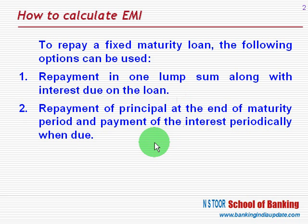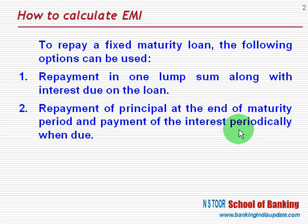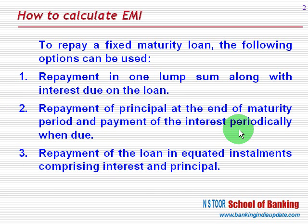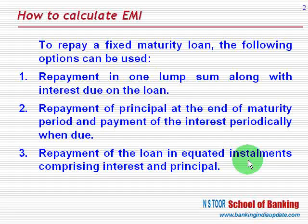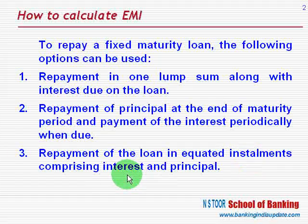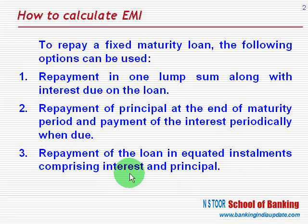Second option: he can repay the principal at the end of the maturity period and in the meanwhile he continues to pay interest periodically when due. Third option: he can repay the loan in equated installments, and that installment includes interest due till that time plus a part of the principal.